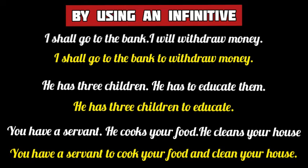We can also combine two or more separate simple sentences into a new simple sentence without changing the meaning by using an infinitive. For example, 'I shall go to the bank' and 'I will withdraw money' — here the second sentence shows a purpose, so it will be changed into an infinitive phrase: I shall go to the bank to withdraw money. Similarly, 'he has three children' and 'he has to educate them' — since both sentences have the same subject 'he,' we can join them using an infinitive in place of the second sentence, because it shows a purpose.